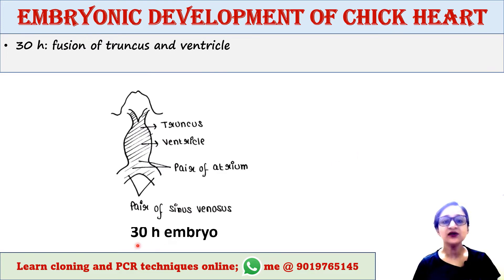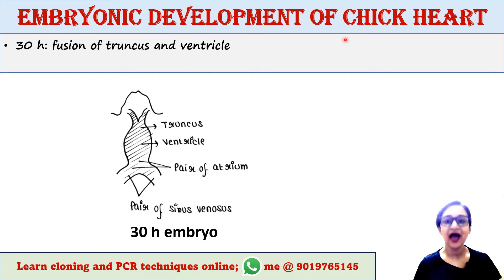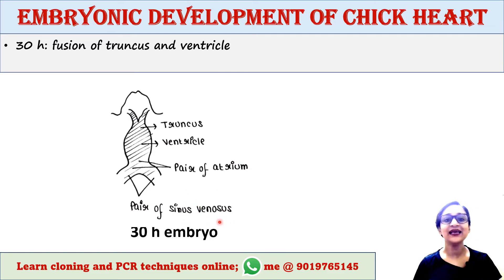At about 30 hours of incubation in the chick embryo, fusion of the truncus and ventricle takes place. However, the atrium and sinus venosus remain unfused — you can still see a pair of atria and a pair of sinus venosus at 30 hours. The truncus forms the aorta in future, and the sinus venosus is a chamber that collects venous blood and delivers it to the atrium.